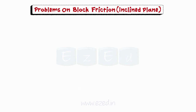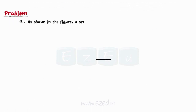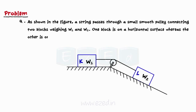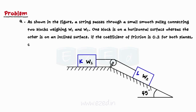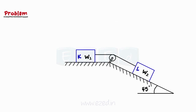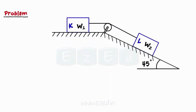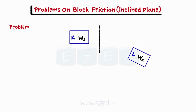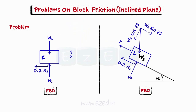Let us now consider the following problem. As shown in the figure, a string passes through a small smooth pulley connecting two blocks weighing W1 and W2. One block is on a horizontal surface whereas the other is on an inclined surface. If the coefficient of friction is 0.2 for both planes, calculate the minimum ratio of W1 to W2 to maintain equilibrium. The weight of block L is responsible for causing motion of the system to impend down the plane. We will now isolate the two blocks and draw their free body diagrams.